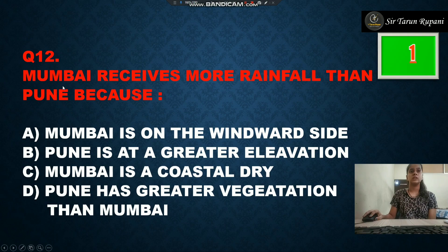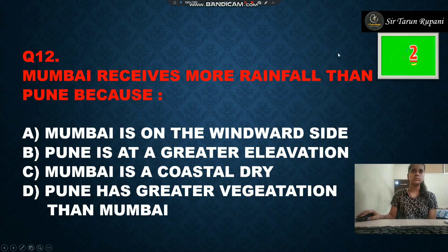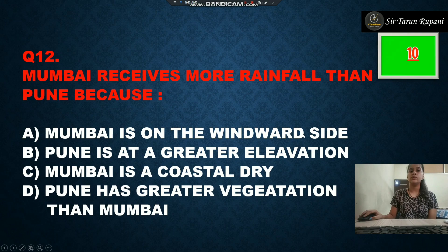Our next question: Mumbai receives more rainfall than Pune because — option A is Mumbai is on the windward side, option B is Pune is at a great elevation, option C is Mumbai is a coastal city, and option D is Pune has greater vegetation than Mumbai. Our correct answer is Mumbai is on the windward side.